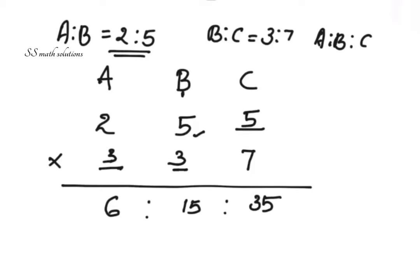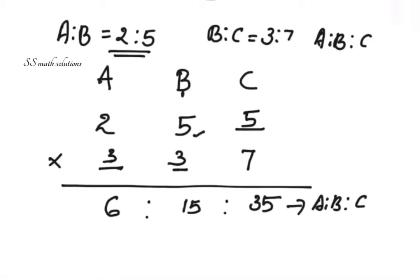So we got the ratio 6 is to 15 is to 35. Is it possible to reduce this ratio to the smallest form? There is nothing common between these three numbers, so this is our final ratio: a is to b is to c is 6 is to 15 is to 35.